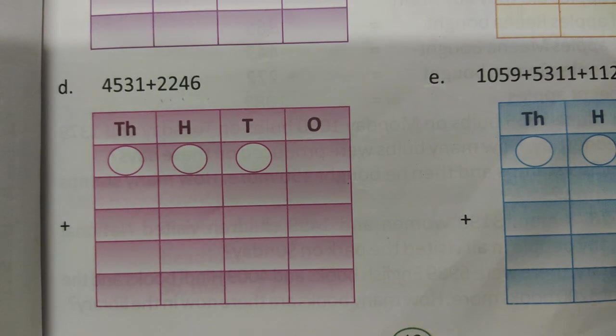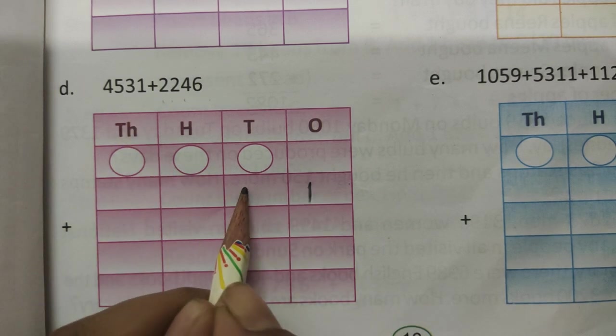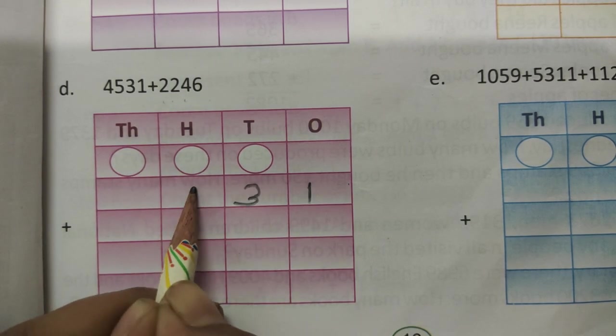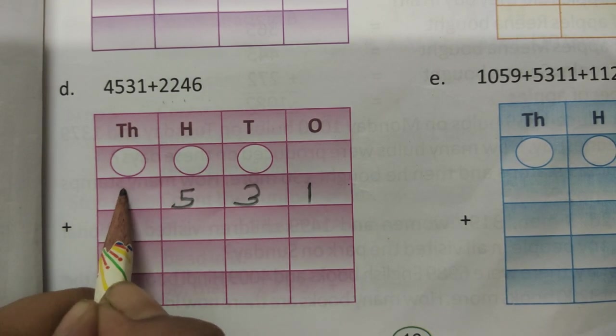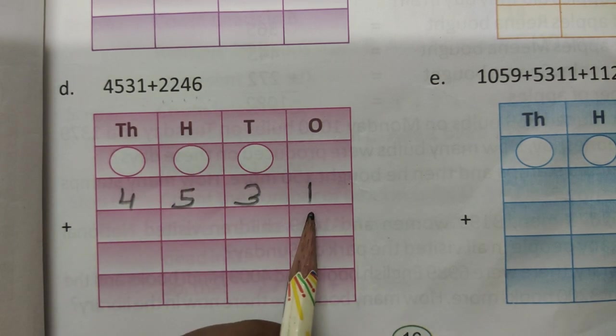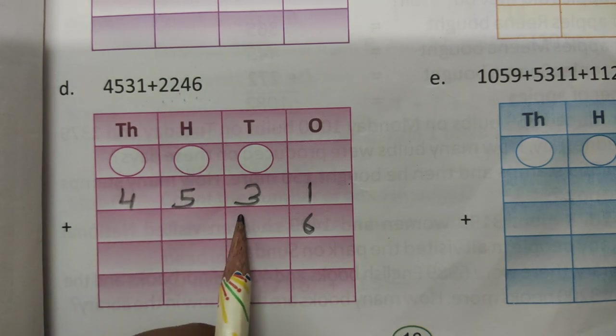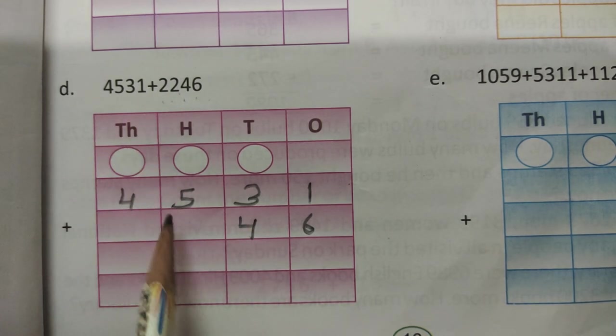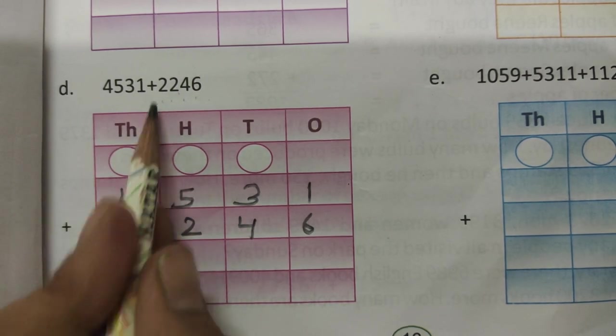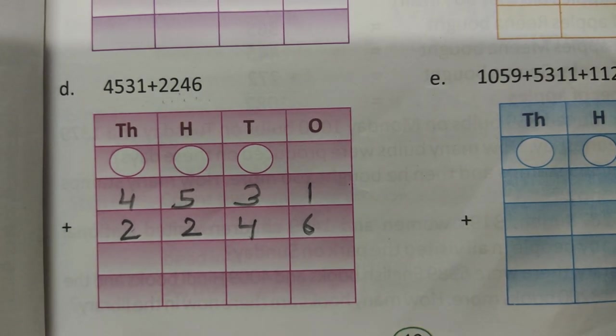4531 and 2246. The position is set: 1 is 1's place, 3 is 10's place, 5 is 100 place and 4 is 1000 place. The next 6 is 1's place, 4 is 10's place, 2 is 100 place and 2 is 1000 place.